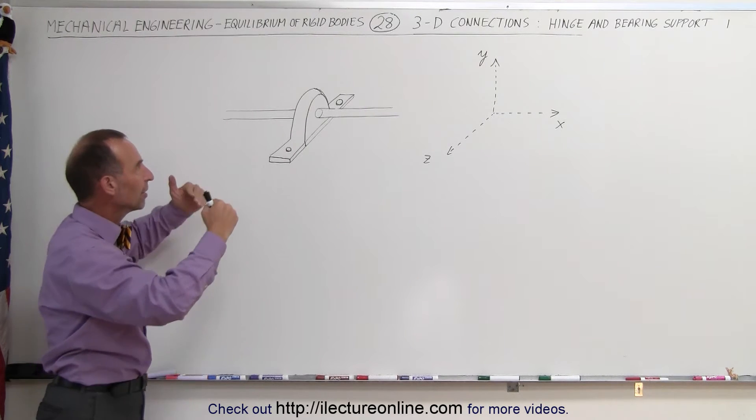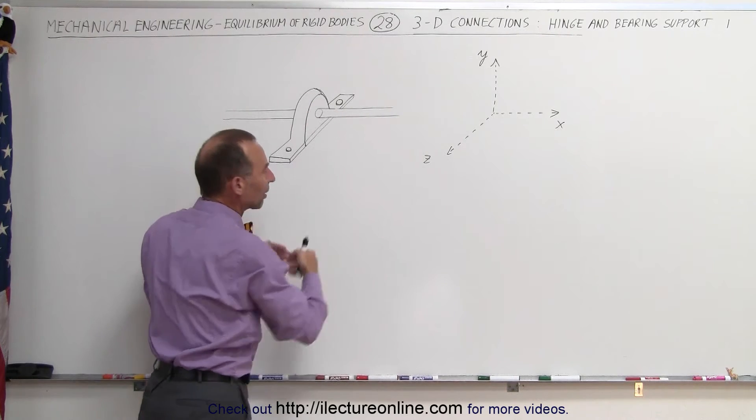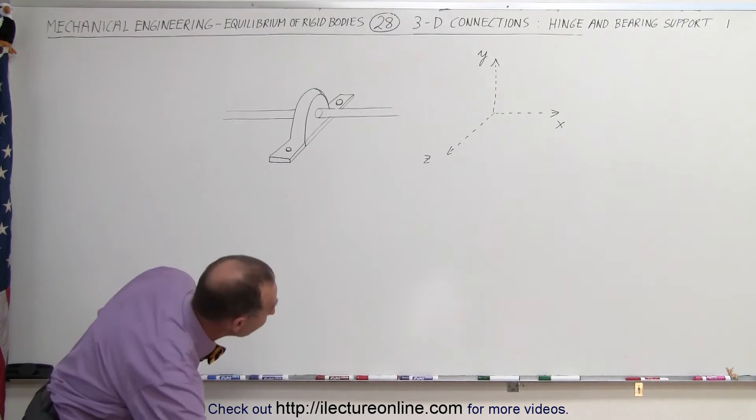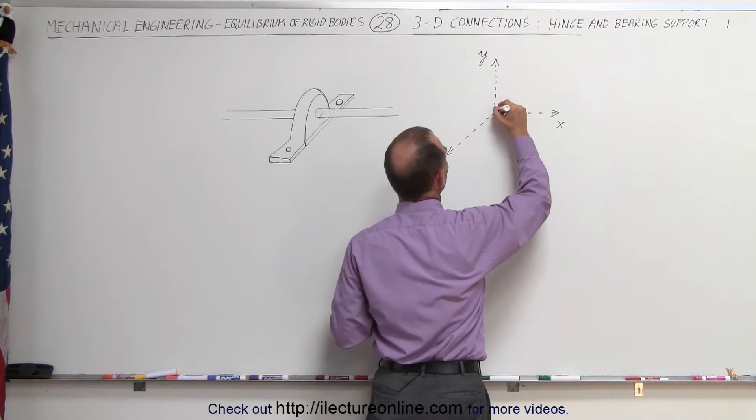It's able to rotate but it's not able to move in the Z direction. It's not able to move in the Y direction. So we can see that there are two forces involved. One that supports it in the vertical direction, so we have a force in this direction.